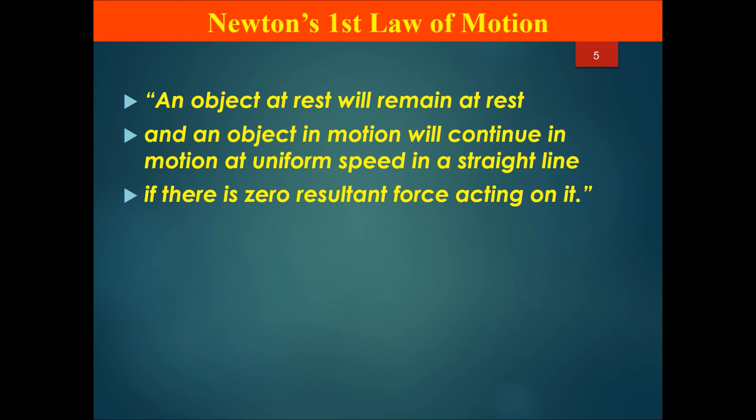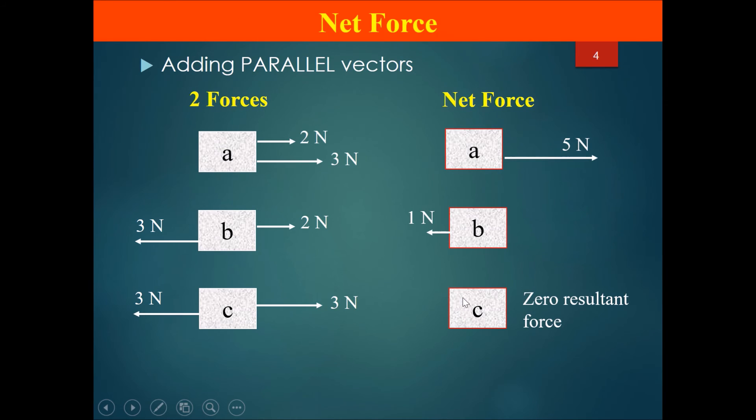Remember the example of zero resultant force was block C. So C can either be not moving at all, or it can be moving at a constant speed.